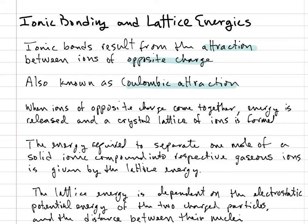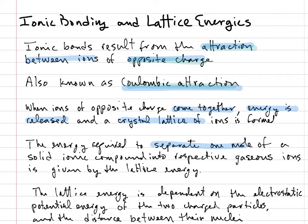Ionic bonds result from the attraction between ions of opposite charge. This is also known as Coulombic attraction and it occurs when ions of opposite charge come together. When they come together, energy is released and a crystal lattice of ions is formed. The energy required to separate one mole of a solid ionic compound into respective gaseous ions is given by the lattice energy.